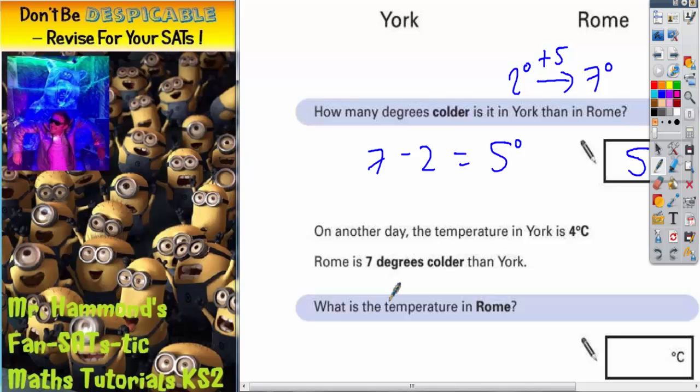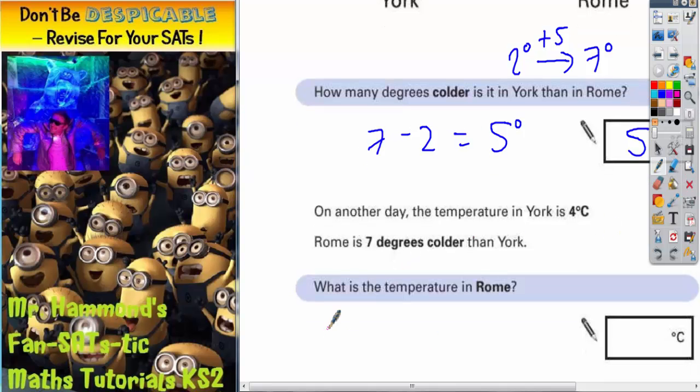Second part of the question. On another day, the temperature in York is 4 degrees. So we've got 4 degrees. And Rome is 7 degrees colder. So what's the temperature in Rome? So we need to go down by 7.